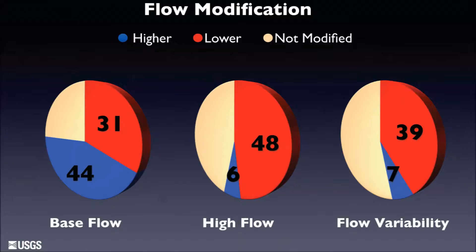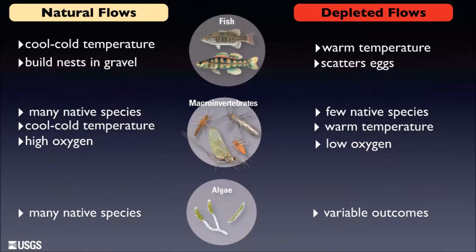What does this matter to the biological communities? In a stream with relatively natural flows not disturbed too much by human activity, the biological communities contain many, many native species, many of which rely on cooler, cold water temperatures. Many macroinvertebrate species have very specific requirements for high dissolved oxygen in the water.